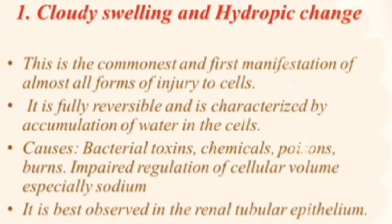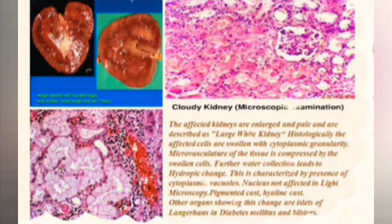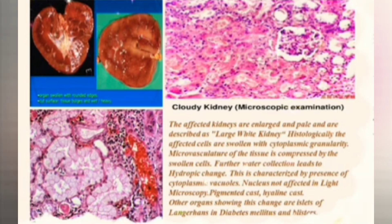It results from impaired regulation of the sodium pump. It is best observed in the renal tubular epithelium. The affected kidneys are enlarged and pale, and are described as a large white kidney.